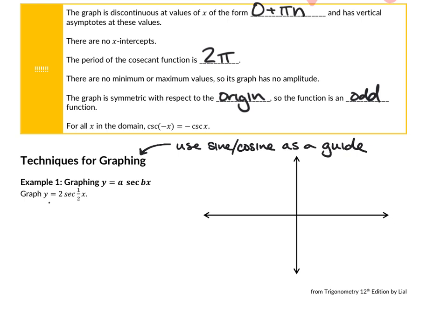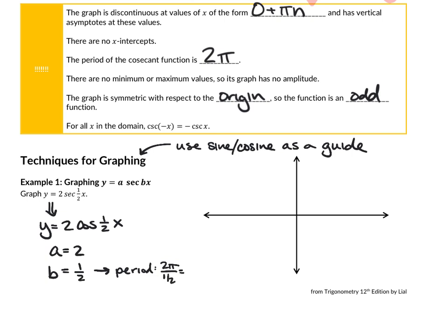For the function y = 2 secant(x/2), it is related to y = 2 cosine(x/2), because secant and cosine are reciprocals. The a value is 2 and the b value is 1/2, which means the period is 2 pi divided by 1/2, or 4 pi. So between 0 and 4 pi, I should graph one entire cosine wave. With an a value of 2, my cosine function will go up to 2 and down to negative 2.